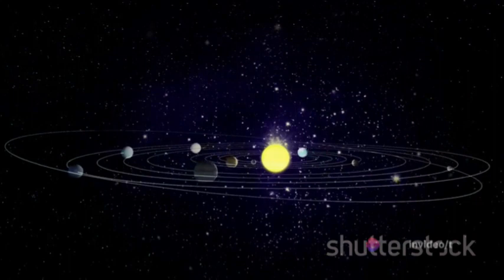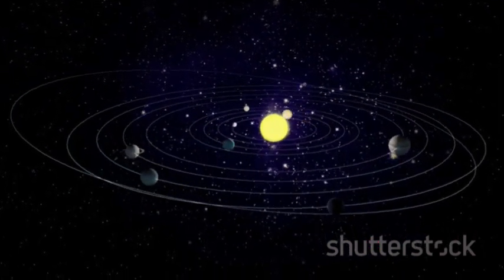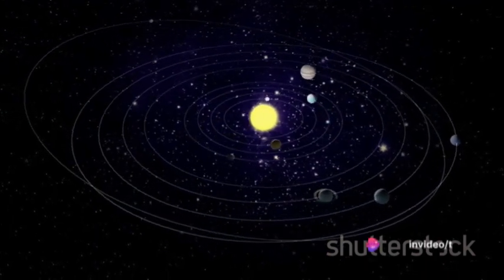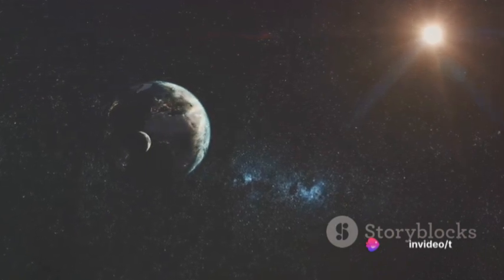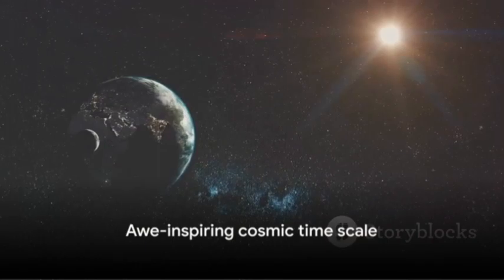This cosmic journey around the Milky Way is what astronomers call a galactic year or cosmic year. It takes our Sun, and by extension our solar system, about 225 million years to complete one cosmic year. That's a mind-boggling timescale, isn't it?